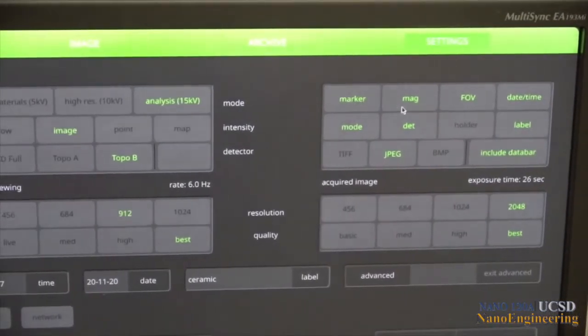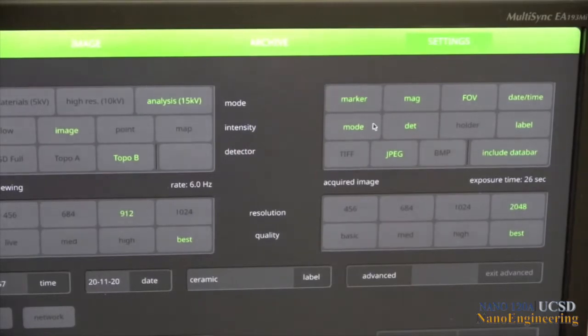The menu boxes on the upper right in the settings mode show a variety of information that can be included in your recorded images. These could be measurement markers, magnification information, date and time, the mode—that is the accelerating voltage—the detector, backscatter detector full, topo A or topo B, data bars, and any labeling information you want to include. Each can be clicked on or off as desired.